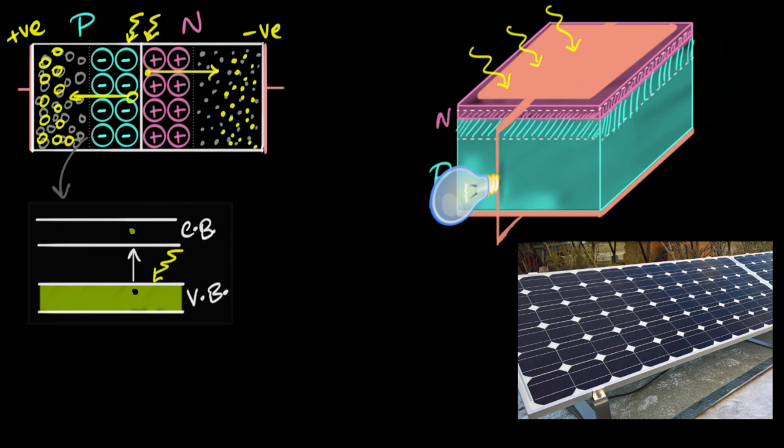One of the ways we solve for this is by having finger-like projections. So instead of having a thick sheet, we will have finger-like projections.